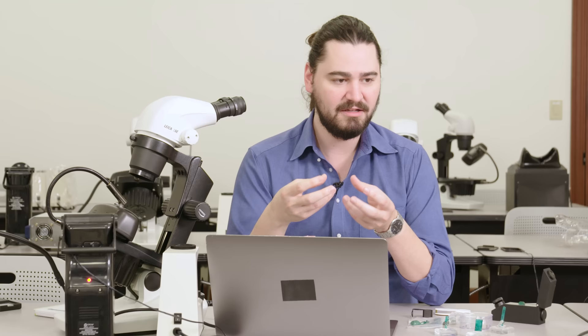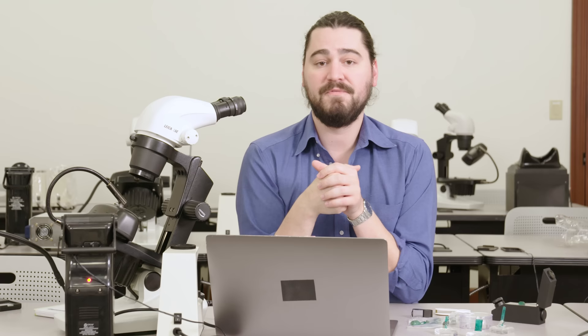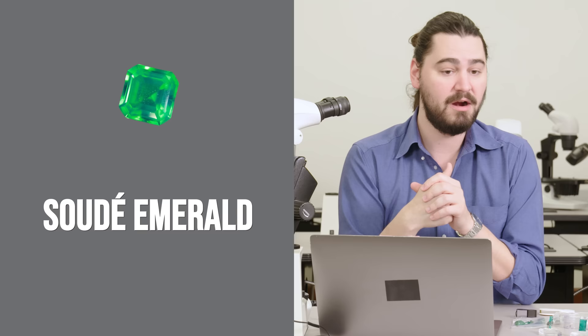Now that we've talked about some green gemstones that are imitators, let's talk about composites. A composite gemstone is basically a couple different materials, sort of Frankensteined together, made to look like a different material. In this case, emerald. So first, we're going to talk about one of the more common imitators, the Soudé emerald.